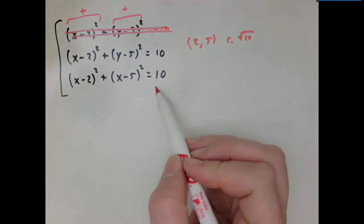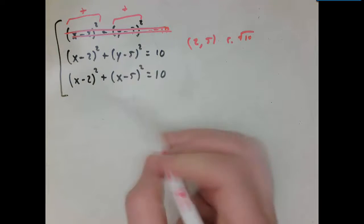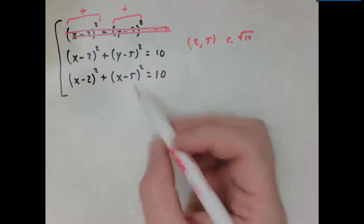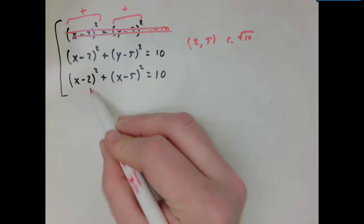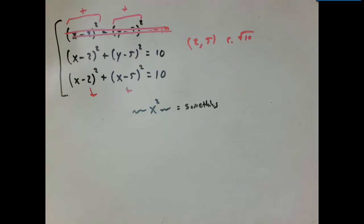Okay, what about this one? This one has a form that's similar to this one. You'll notice there's no y's at all. I only have x's. So if you were to multiply this out, you'd end up getting some kind of quadratic equation for x.